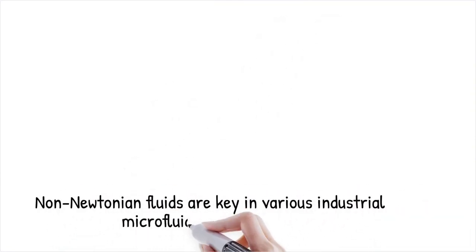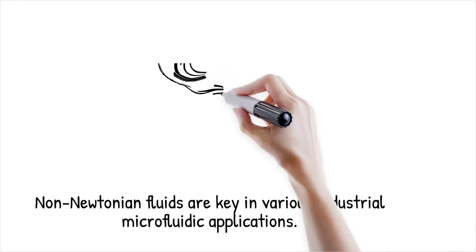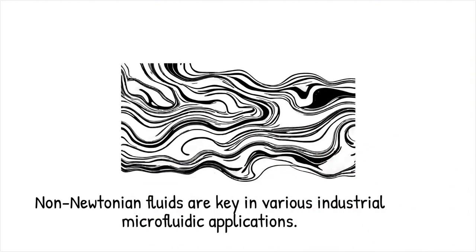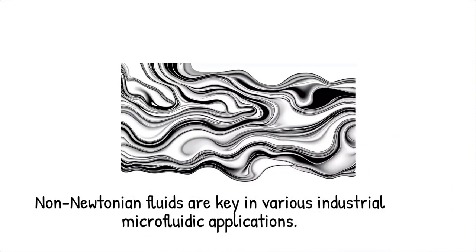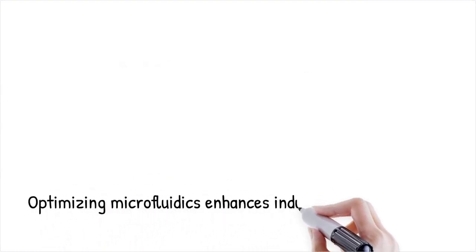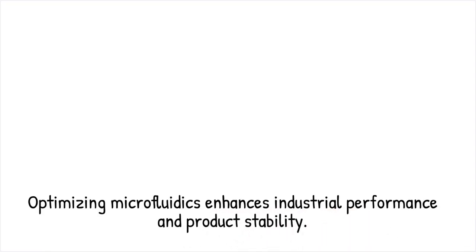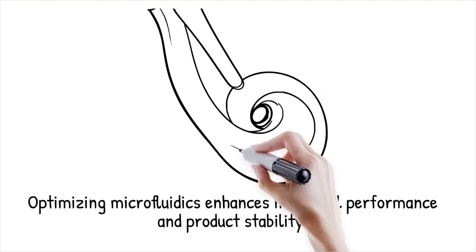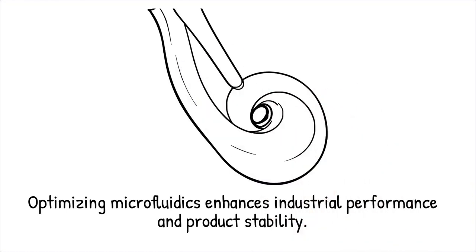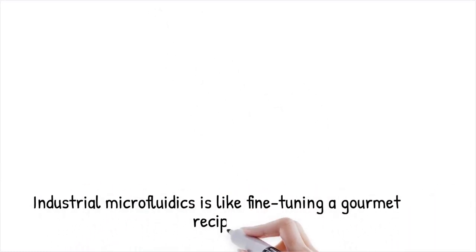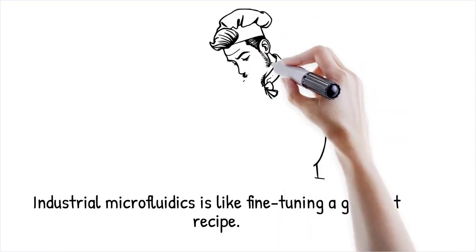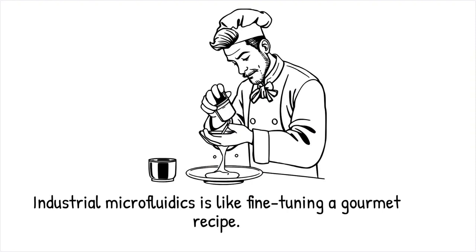Non-Newtonian fluids play a crucial role in industrial processes including inkjet printing, cosmetic formulations, and food emulsions, where precise control over viscosity and flow is essential. Microfluidic methods enhance these applications by enabling high-throughput screening and custom fluid formulations with tunable rheological properties. Understanding non-Newtonian microfluidics allows industries to optimize performance, stability, and efficiency in complex fluid processing. Microfluidics has improved the formulation of shear thinning cosmetic creams, ensuring uniform application and skin penetration while maintaining stability over time. Designing industrial microfluidic processes is like fine-tuning a gourmet recipe — each ingredient and fluid property must be precisely controlled to achieve the perfect consistency and effect.